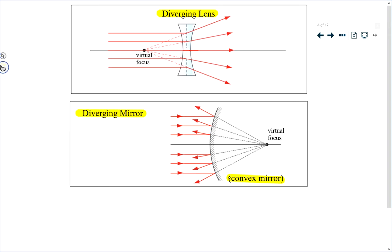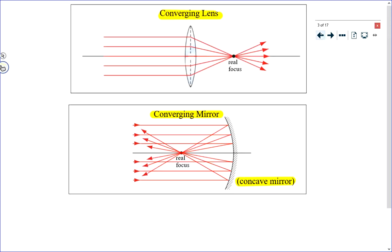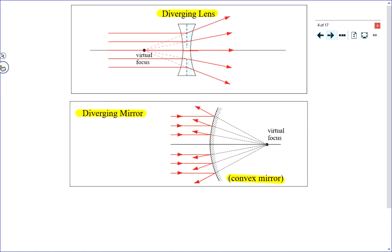What I'm going to do right now is insert a video which shows this process: parallel beams of light and how they are affected by a diverging lens, a diverging mirror, a converging lens, and a converging mirror. So we'll take a look at a video showing some demonstrations and then we'll move on.